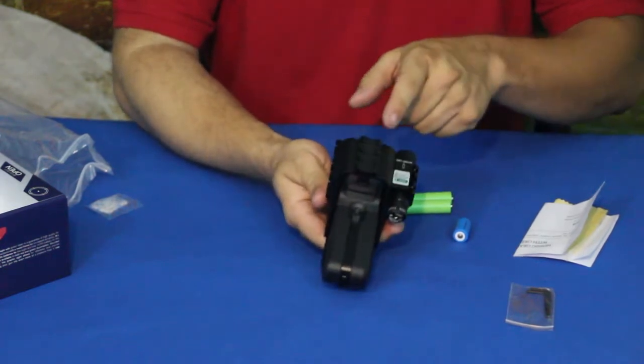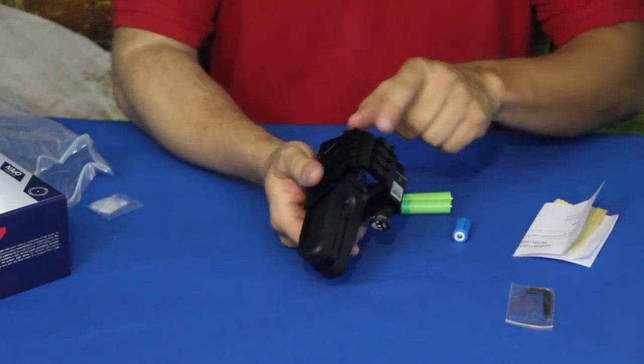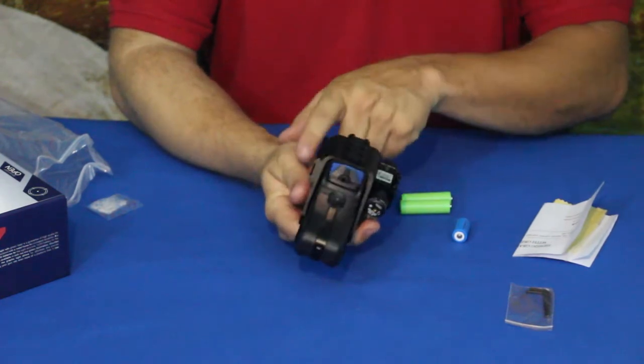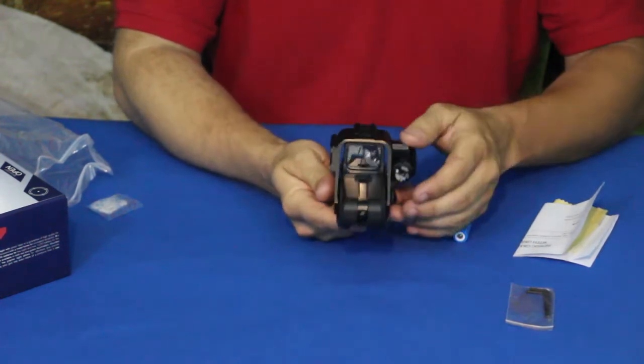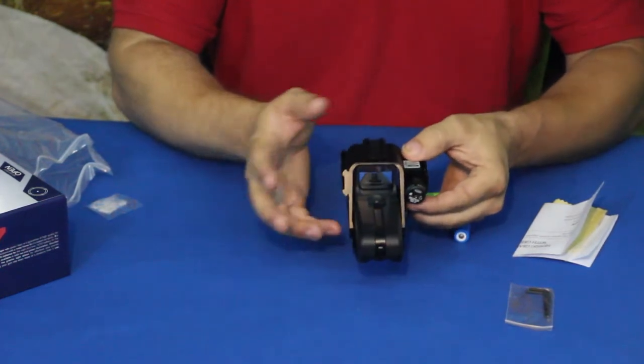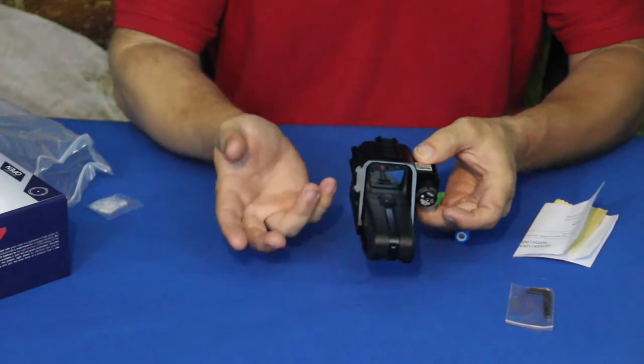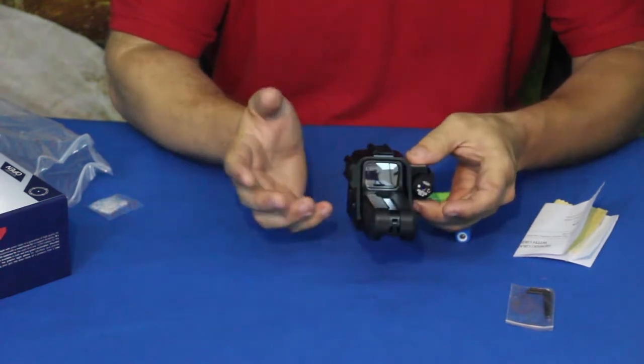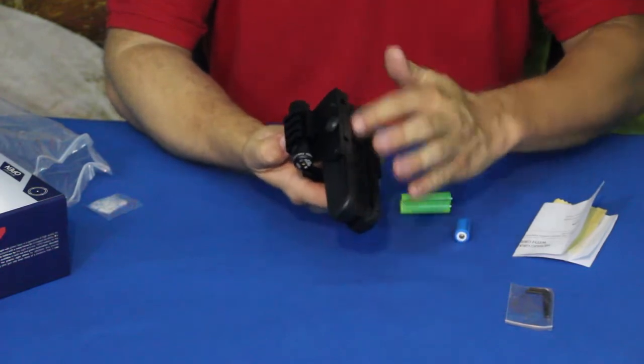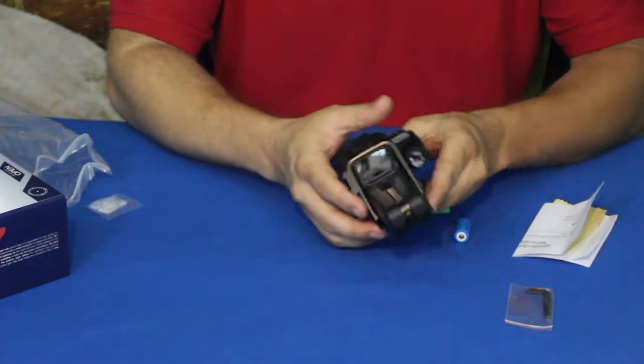The nice thing is, as you can see, it also has additional rail even on the side where the laser's at. So you don't completely lose all your functionality if you have additional sights, or maybe you want to put a flashlight or something like that. You're not going to lose everything because of this being a longer type of sight.